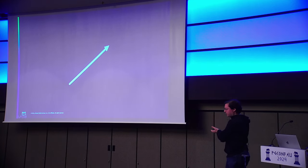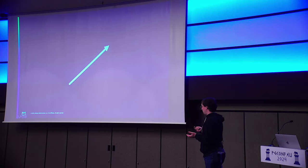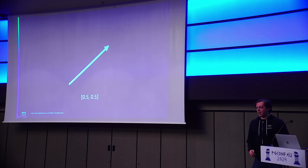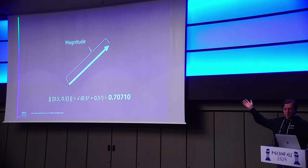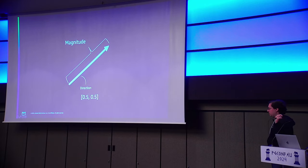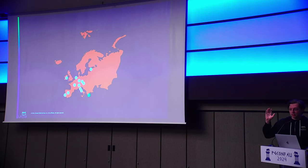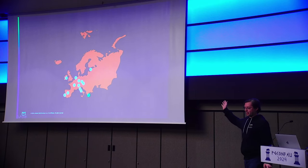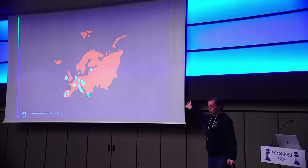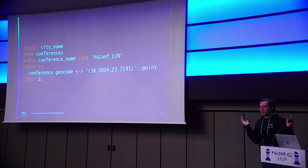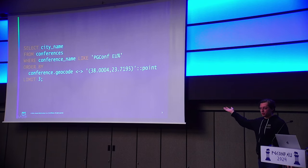It all comes down to this funny little arrow thing called a vector. A vector has some special properties — it has a size, called a magnitude, and it has direction. It's something that's generally very useful. For example, I found this is a standard PowerPoint image — there's a map of Europe — and I decided to plot where all the PGConf EUs have been through the years. Here we are today in Athens. What if I wanted to run a query like: find me the three closest cities that we've had PGConf EU before, to Athens? And it looks something like this — we can do this in Postgres today.